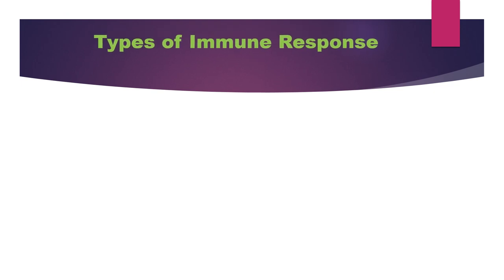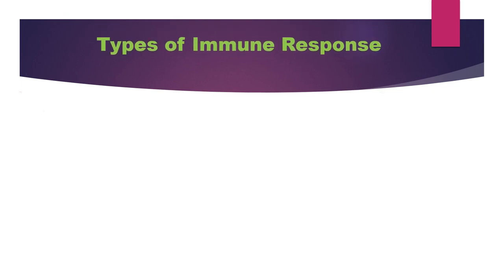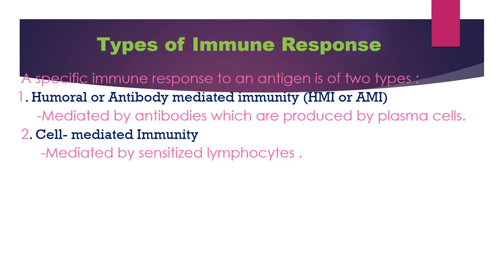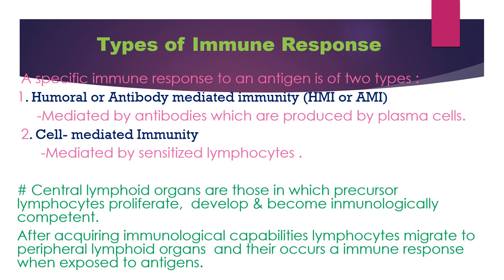There are two types of specific immune response to an antigen. The first type is humoral or antibody-mediated immunity (HMI), and the second is cell-mediated immunity (CMI). HMI is mediated by antibodies produced by plasma cells, while cell-mediated immunity is mediated by sensitized lymphocytes.